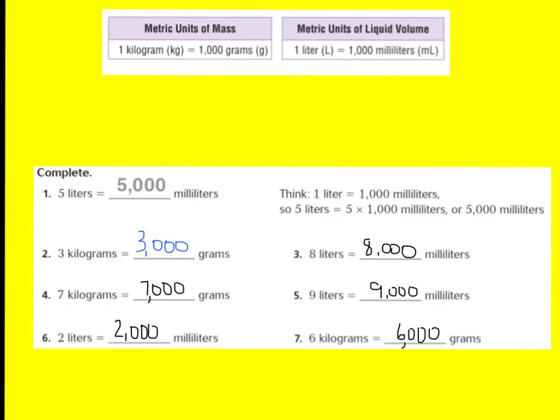Okay, for questions three through seven, this should be your answer. For question number three, you should have 8,000 milliliters are in 8 liters because for every one liter is 1,000 milliliters. For number four, 7 kilograms equals 7,000 grams because one kilogram has 1,000 grams. Therefore, 7 kilograms would equal 7,000 grams.